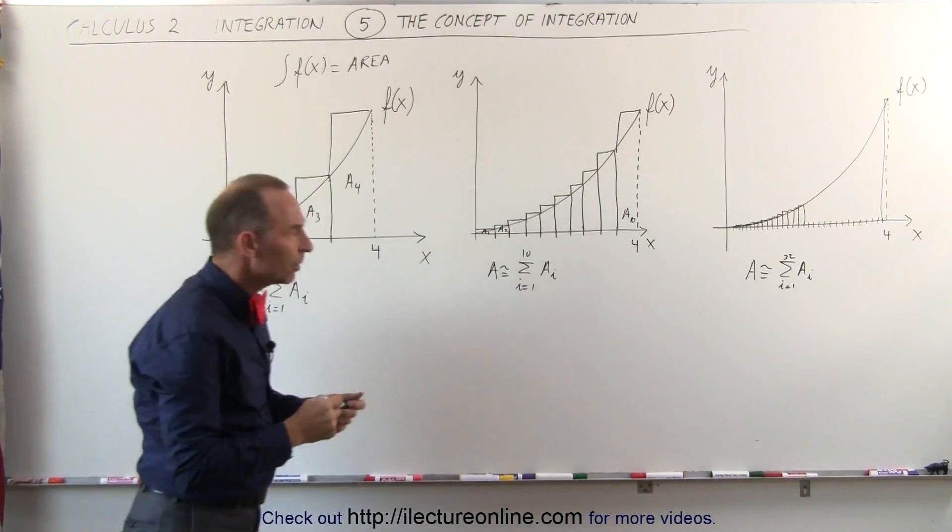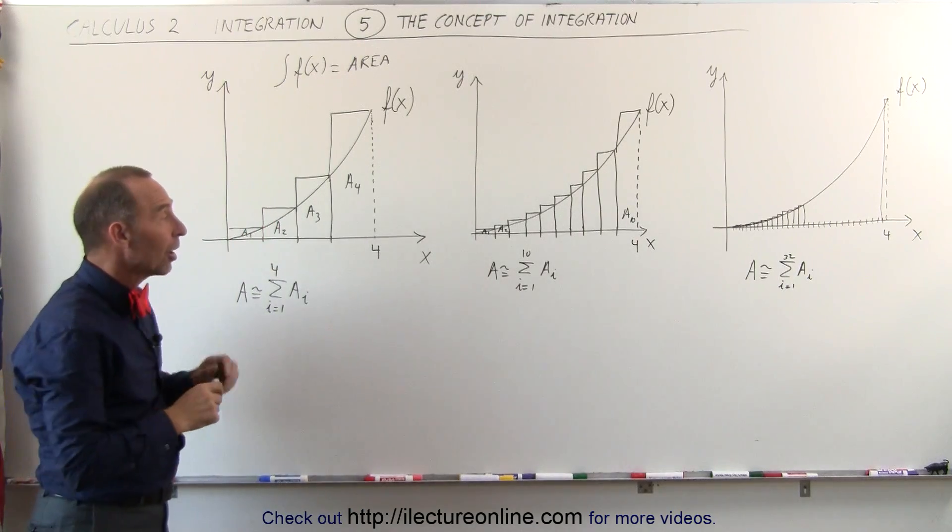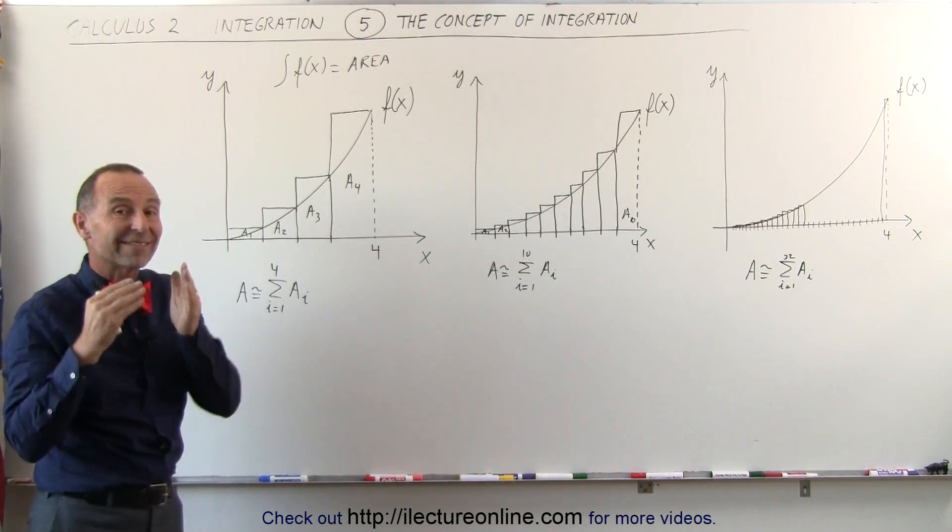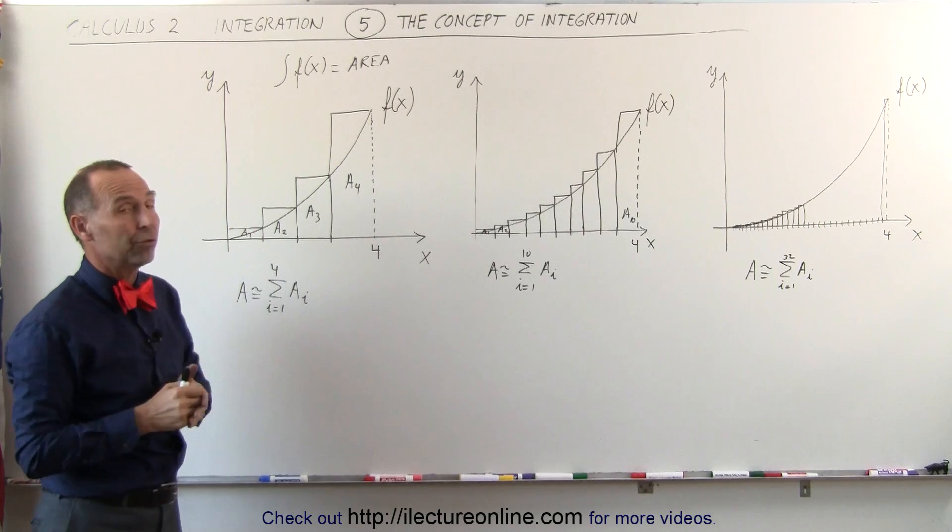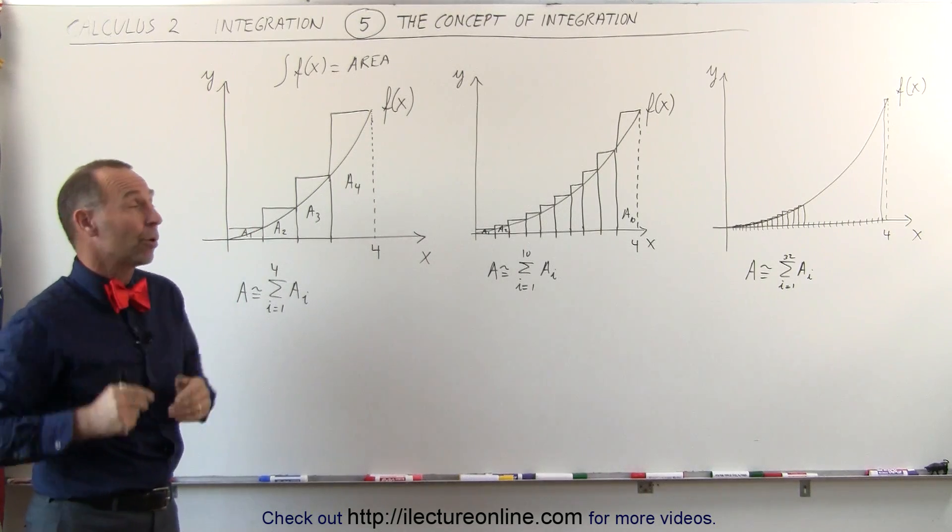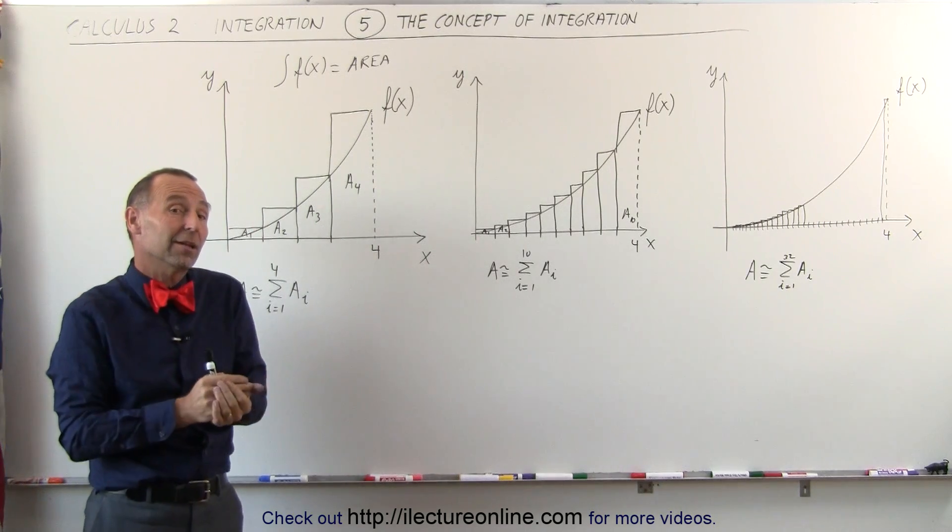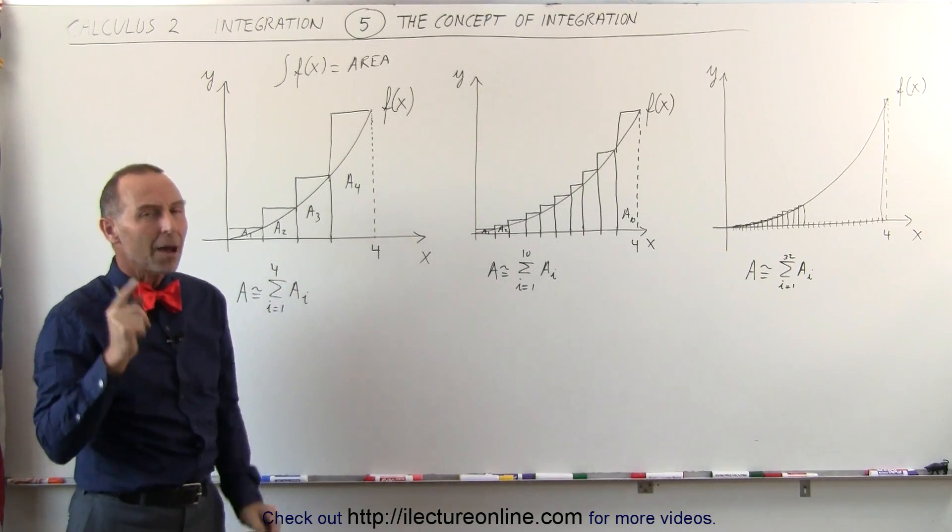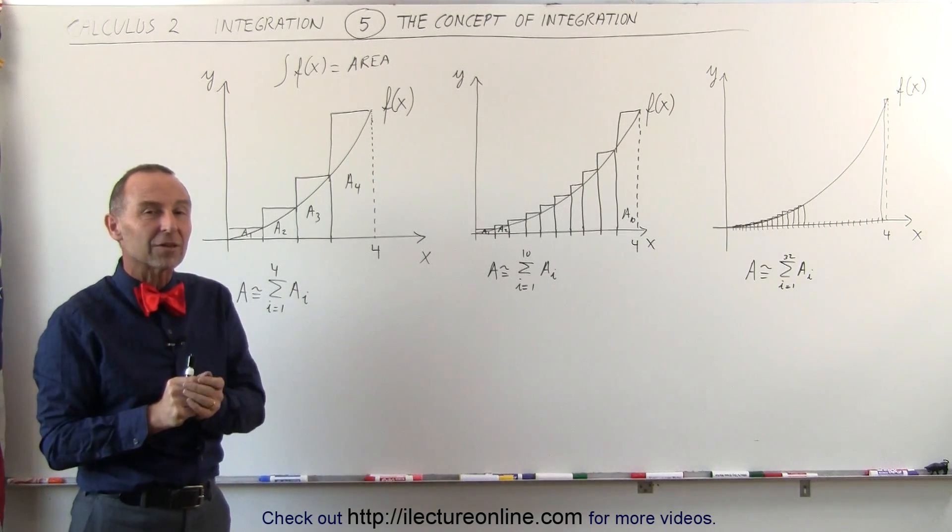I think you begin to see the pattern. If I just want the area in those rectangles to exactly equal the area under the curve, I just need to come up with more and more rectangles. 32 isn't enough, maybe I need a hundred, maybe I need a thousand. How about if I have a million rectangles?